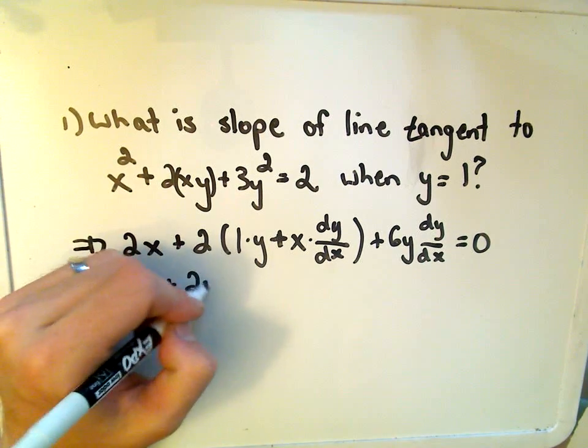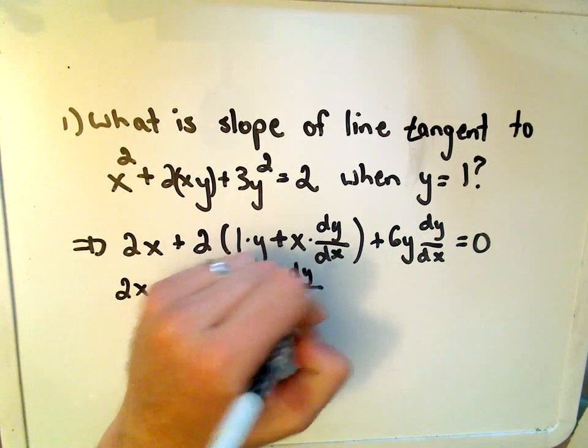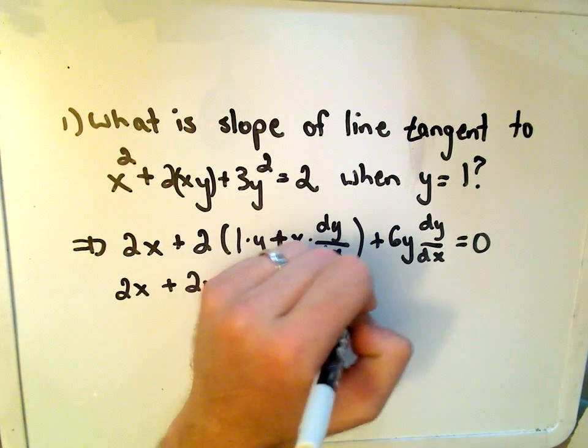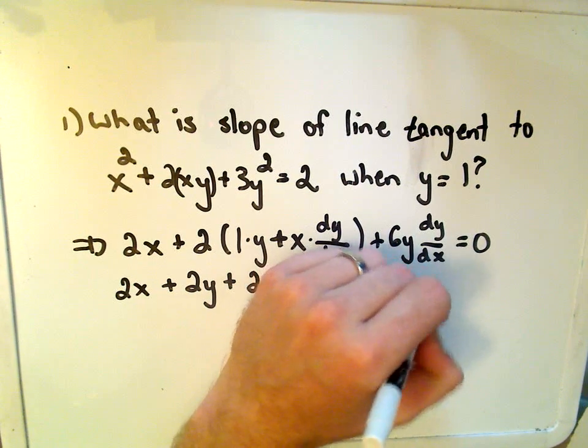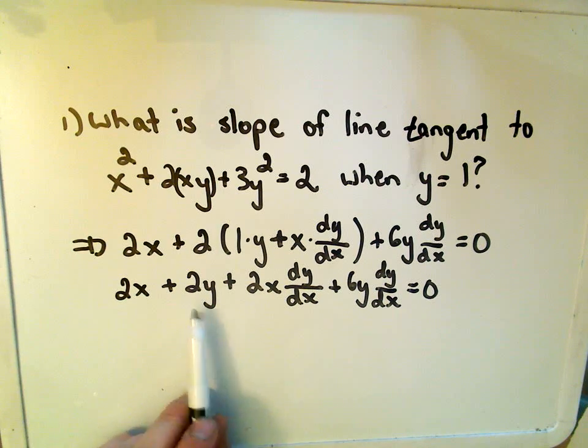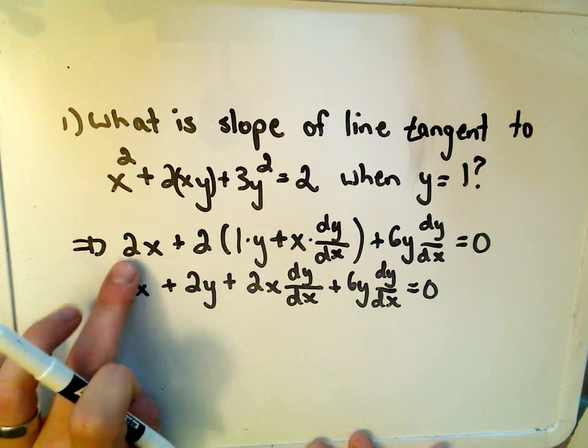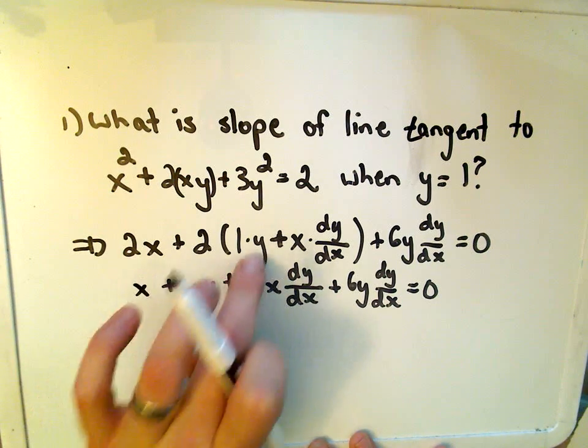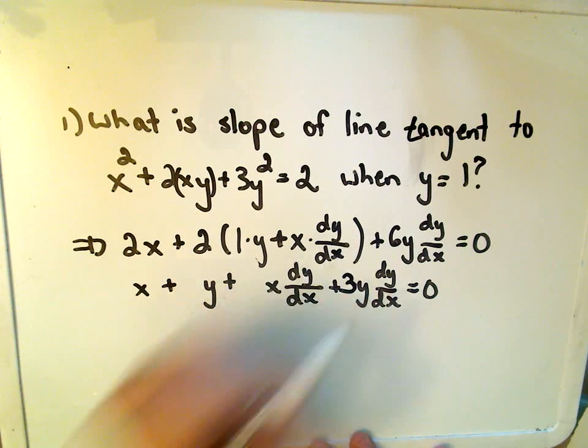So we have 2x plus 2y plus 2x dy/dx plus 6y dy/dx equals zero. And notice if we subtract, we can actually factor a 2 out of everything. There's a 2, 2, 2, and a 6. So if we divide each side by 2, I'll get rid of the coefficients. If you divide 6 by 2, we get 3.